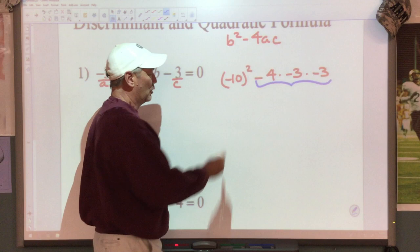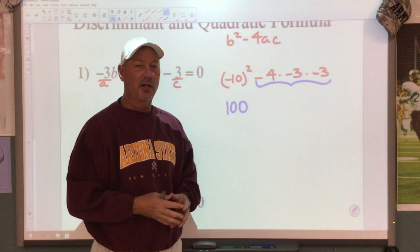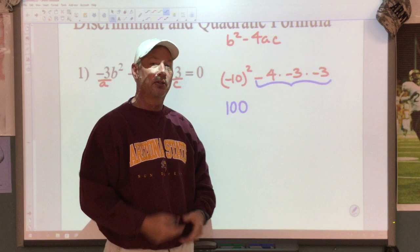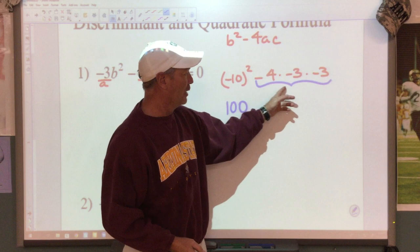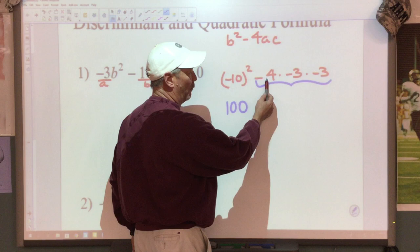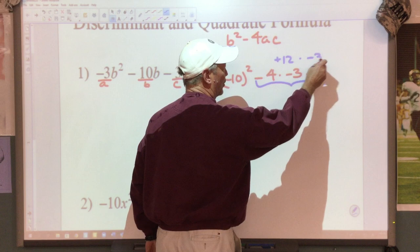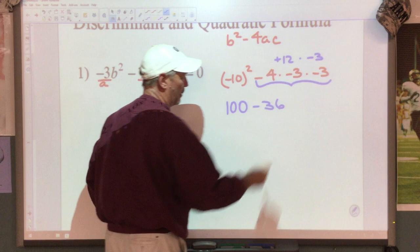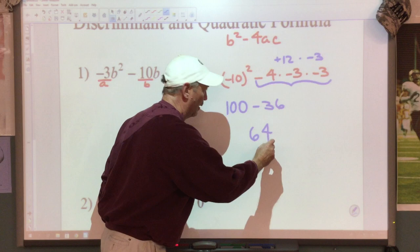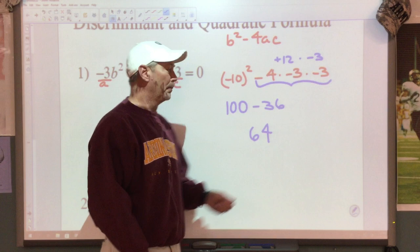Negative 10 times negative 10 is going to be positive 100. Sometimes students get in a hurry and try to do subtraction, but this is multiplication, and the order of operations tells us we need to do multiplication before subtraction. So take care of all your multiplication first. Negative 4 times negative 3 is positive 12, times negative 3 is negative 36. So 100 minus 36 is 64. There's my answer: 64.